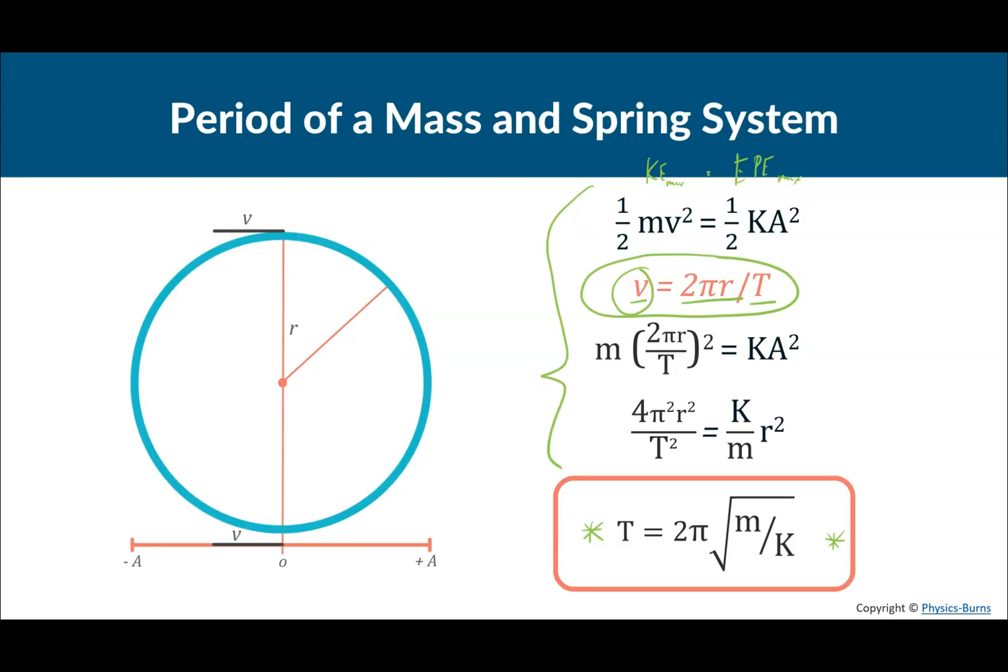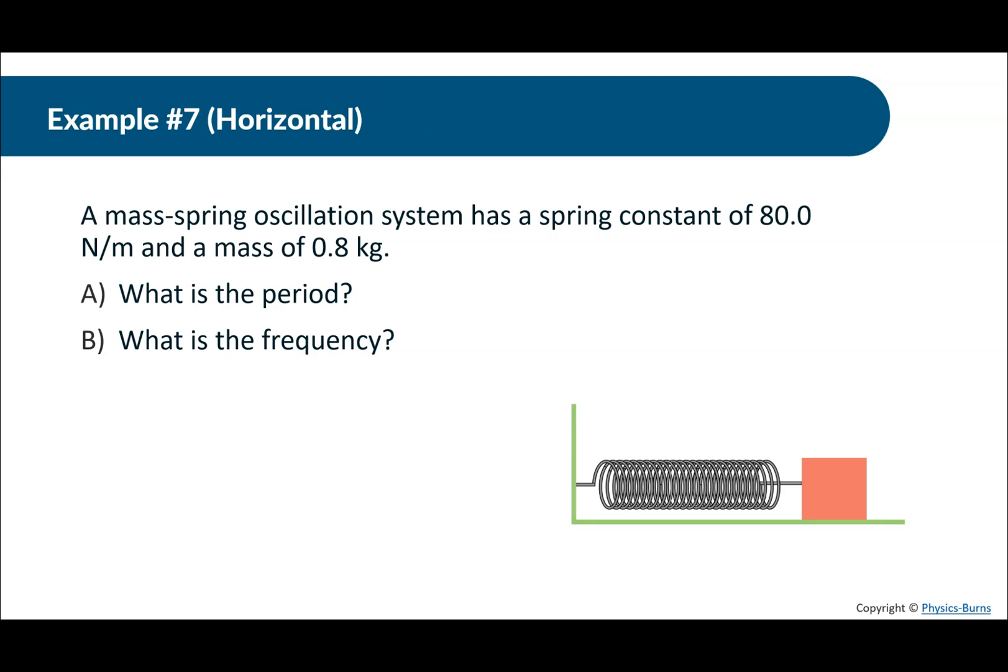Moving on. So this is a period of a mass and spring system. Example number seven. A mass spring oscillation system has a spring constant of 80 newton per meter and a mass of 0.8 kilograms. A, what is the period? The period, remember, is going to be equal to 2π square root of m over k. So we have 2π, m is 0.8, and k is 80. Now let's just put this into our formula sheet. 0.8 divided by 80 square root times 2π. And we get 0.63 seconds.